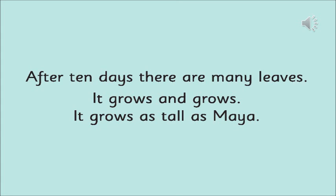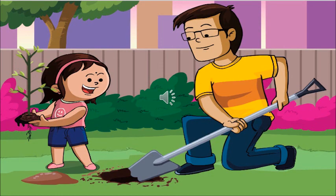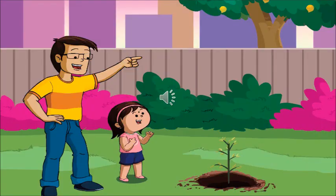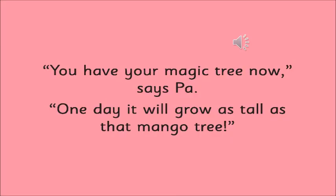Now what is the father doing? The father is digging the soil to plant the tree. And how is Maya helping? Maya is helping her father plant the tree in the ground, because it has to be moved from the pot to the ground. How tall does her father say the tree will grow? The father says the tree will grow as tall as the mango tree. And what does Maya have to do to take care of the tree? She has to water it and make sure no one cuts it down — that is how Maya will take care of it.